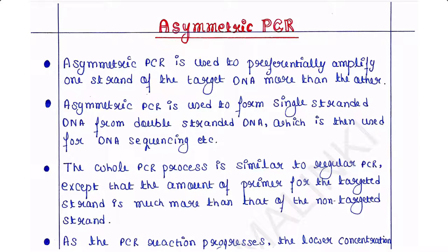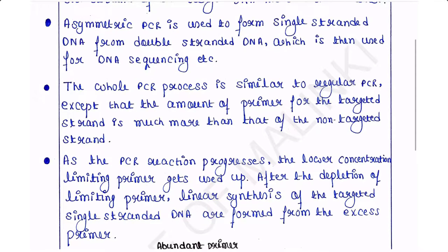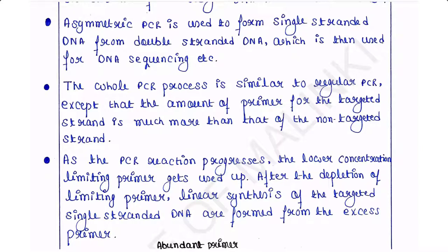The whole PCR process is similar to regular PCR except that the amount of primer for the targeted strand is much more than that of the non-targeted strand. As the PCR reaction progresses, the lower concentration limiting primer gets used up. After the depletion of the limiting primer, linear synthesis of the target single-stranded DNA is formed from the excess primer.